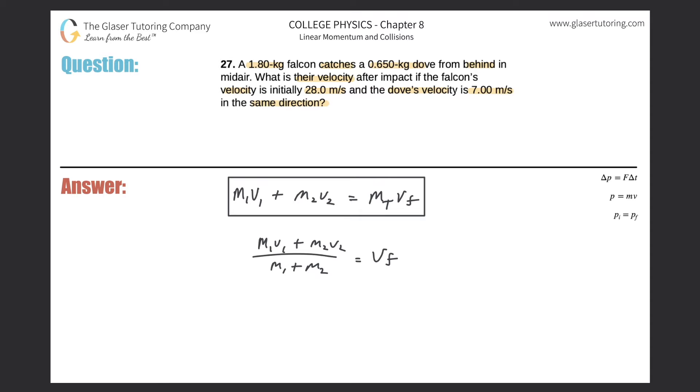And now all we have to plug in. So let's take the first object to be the falcon. The mass of the falcon was 1.80 kilograms, and that falcon had an initial velocity of 28 meters per second.